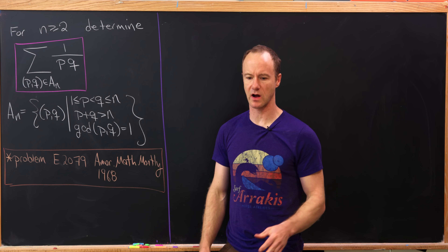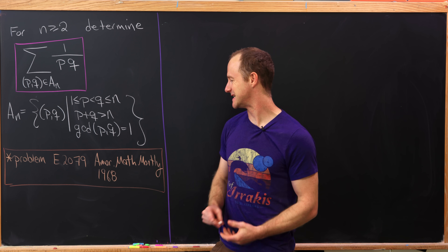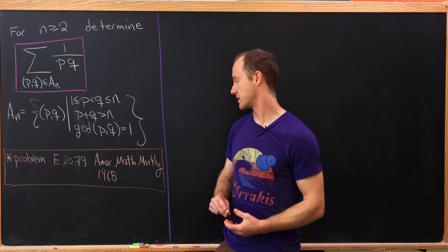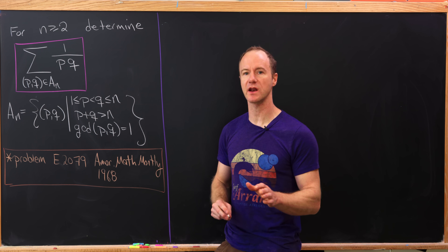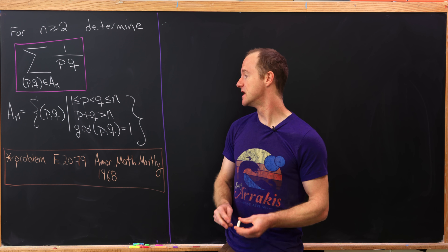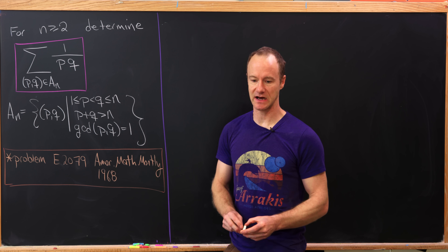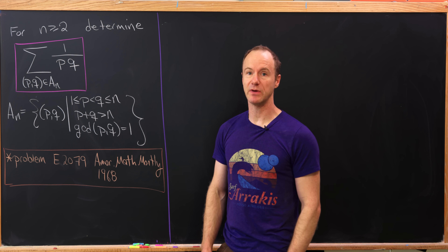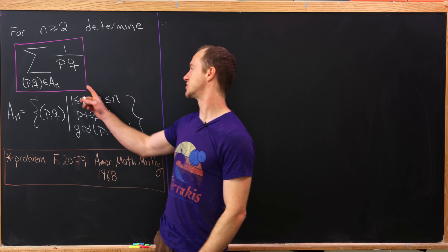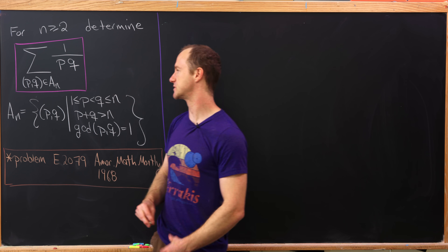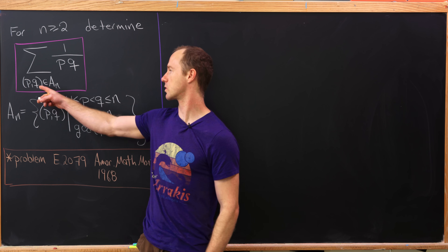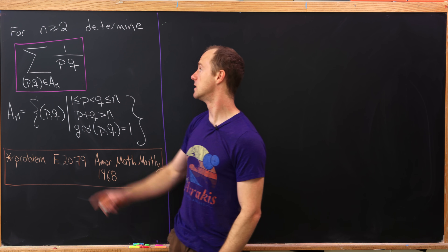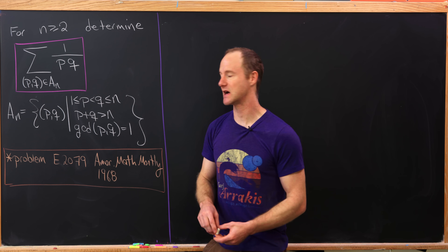Today I've got a nice sum problem that comes from a 1968 submitted problem to the American Mathematical Monthly. If you want to look it up, it's problem number E2079. For all n greater than or equal to 2, we want to determine the following sum: the sum over all ordered pairs p and q from a set called A_n of 1 over p times q.